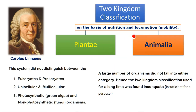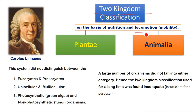If we talk about classification, the most important thing is Linnaeus, who proposed the two-kingdom classification. The basis of this classification is nutrition and locomotion. The first group is Plantae and the second group is Animalia — all plants in Plantae and all animals in Animalia.